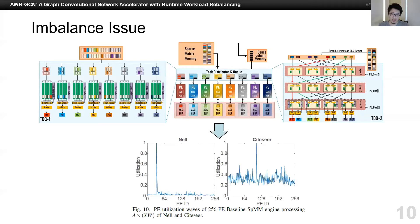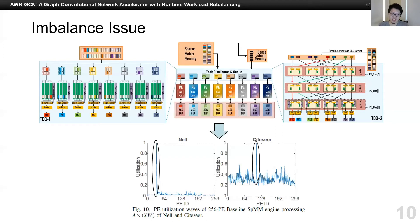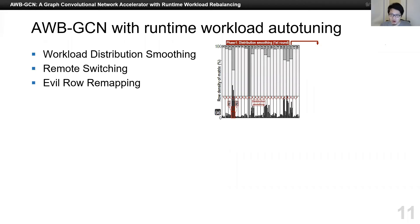To solve this, we propose the AWB-GCN architecture with runtime workload auto-tuning. There are three sub-techniques in our auto-tuning design. Workload distribution smoothing is for getting rid of local fluctuation. Remote switching is for minor crests, and evil row remapping is for major crests. Each round of auto-tuning includes two phases. In the first phase, data processing and distribution smoothing are performed. In the second phase, remote switching and row remapping will be activated. Let's see this figure — the gray bars at the top show the execution time of all PEs, and the length changes dynamically through the process.